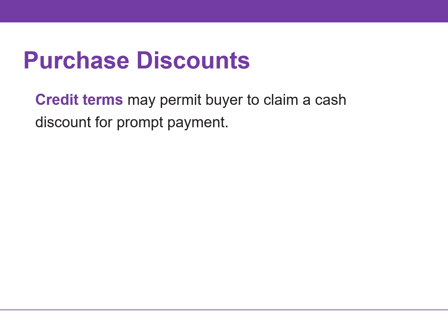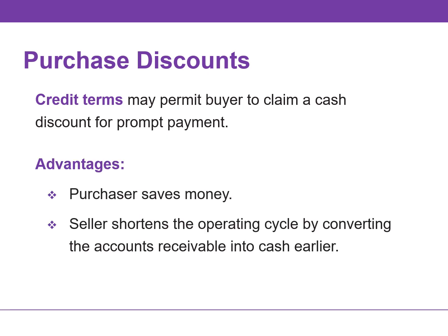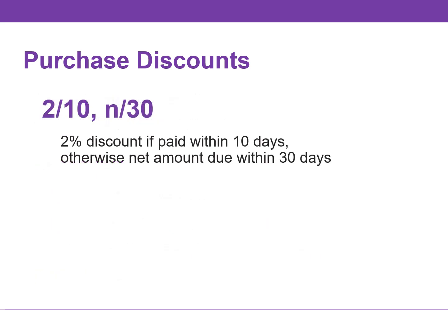The credit terms of a purchase on account may permit the buyer to claim a cash discount for prompt payment. The buyer calls this a purchase discount. The incentive offers advantages to both parties: the purchaser saves money, and the seller is able to shorten the operating cycle by converting accounts receivable into cash. The credit terms specify the amount of the cash discount and the time period in which it is offered, as well as the time period in which the purchaser is expected to pay the full invoice price. In our previous illustration, credit terms are 2/10, net 30. This means the buyer may take a 2% discount on the invoice price less any returns or allowances if payment is made within 10 days of the invoice date — that's the discount period. Otherwise, the net amount is due 30 days from the invoice date.